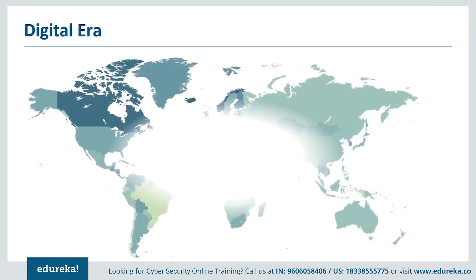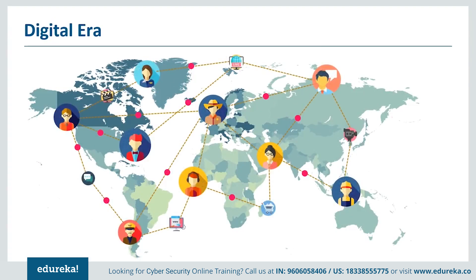The internet today informs, entertains and connects us. It's the backbone of the global economy. Our devices, which are connected through the internet and other networks, open up a world of possibilities. For example, we can access information without having to keep it on our devices permanently and we can easily communicate with others on the other side of the world. However, these connections also leave our devices vulnerable to damage and our information vulnerable to theft.